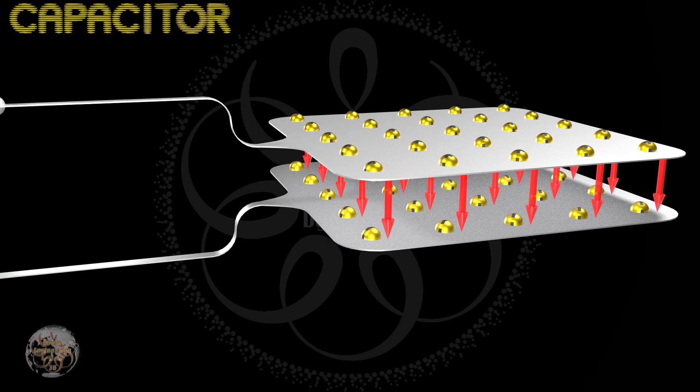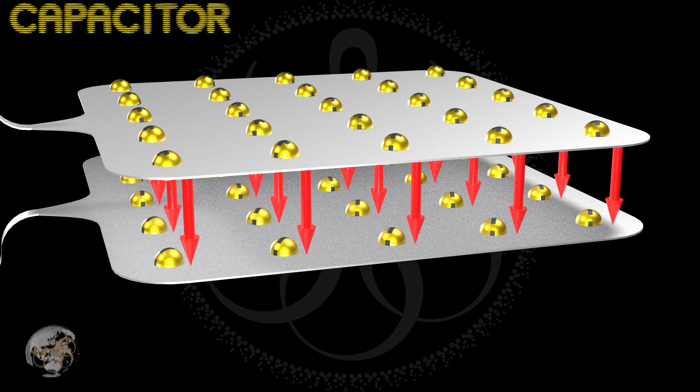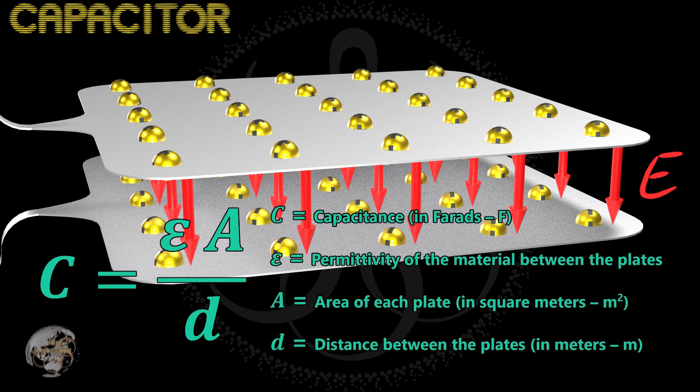If we disconnect the battery from the capacitor, the electric field will remain, provided there is no charge leakage. If we have a capacitor, and an electric field is present within it, the capacitor will store electric energy.